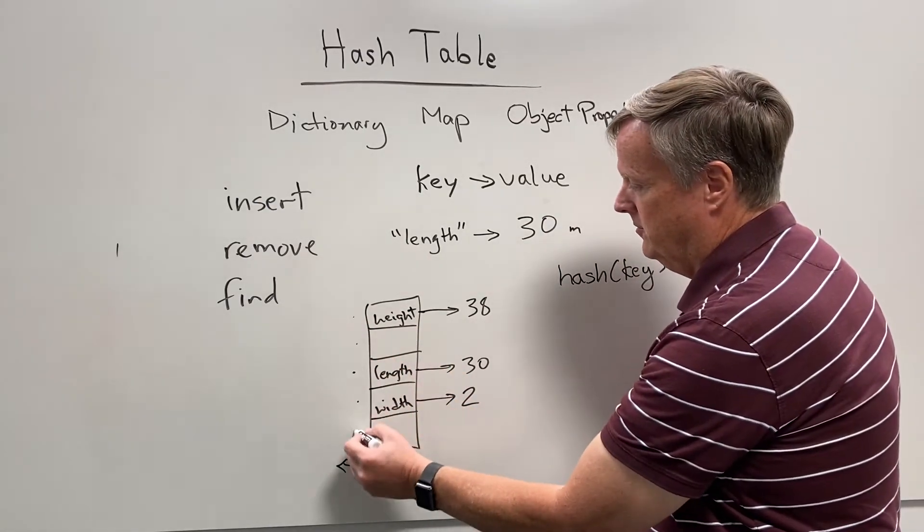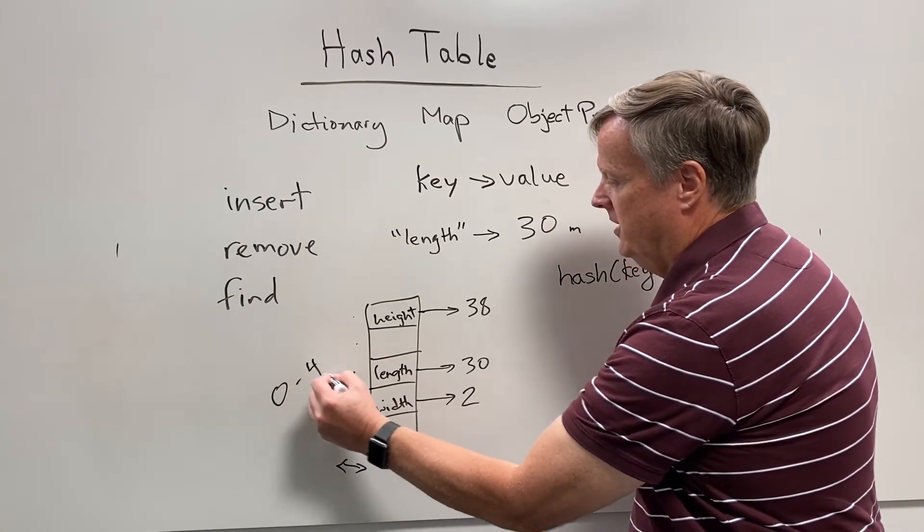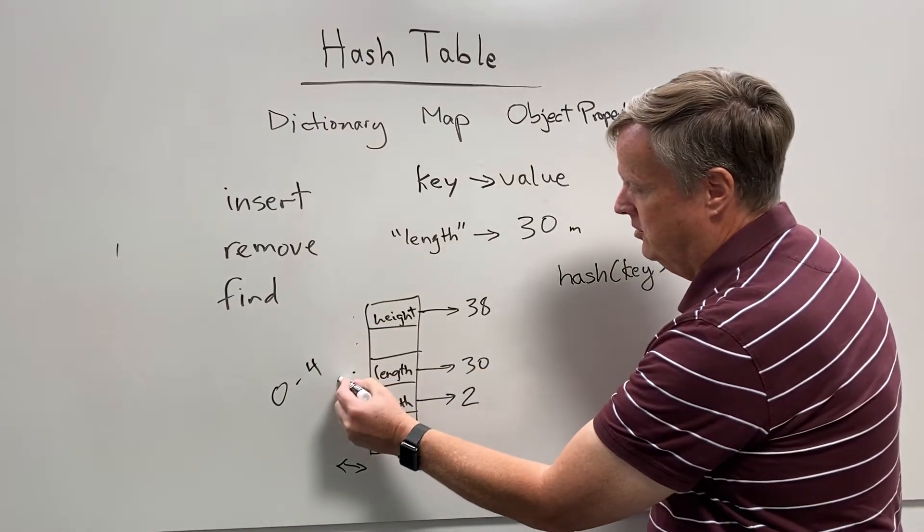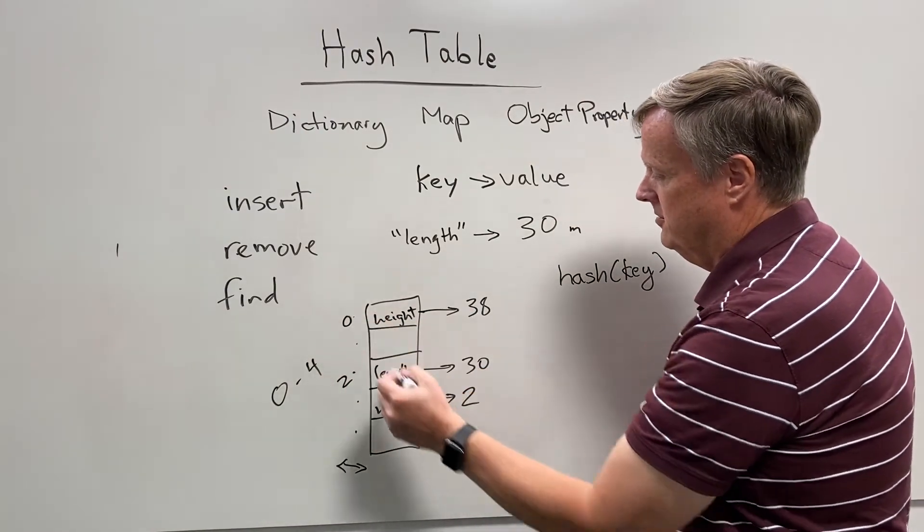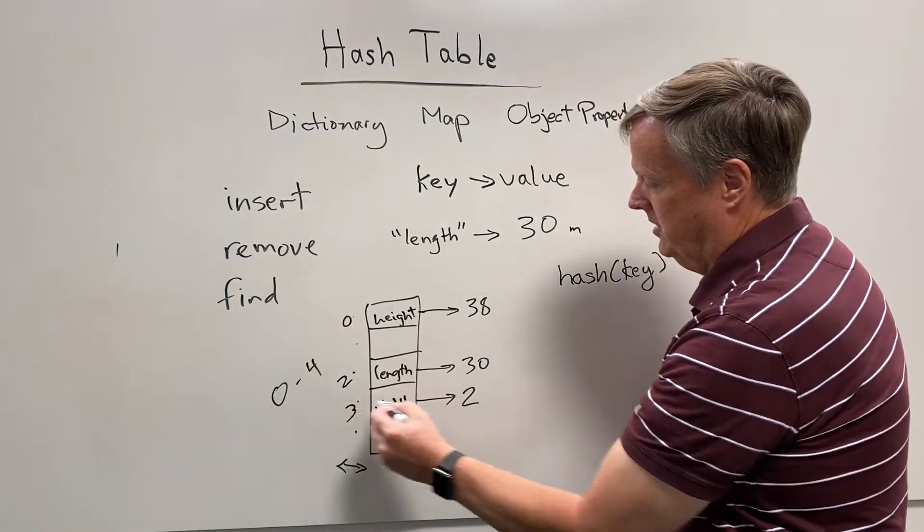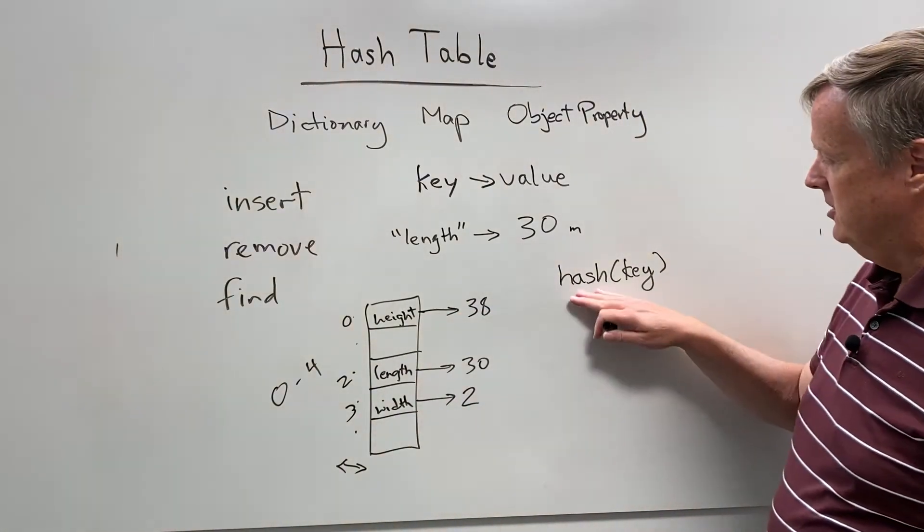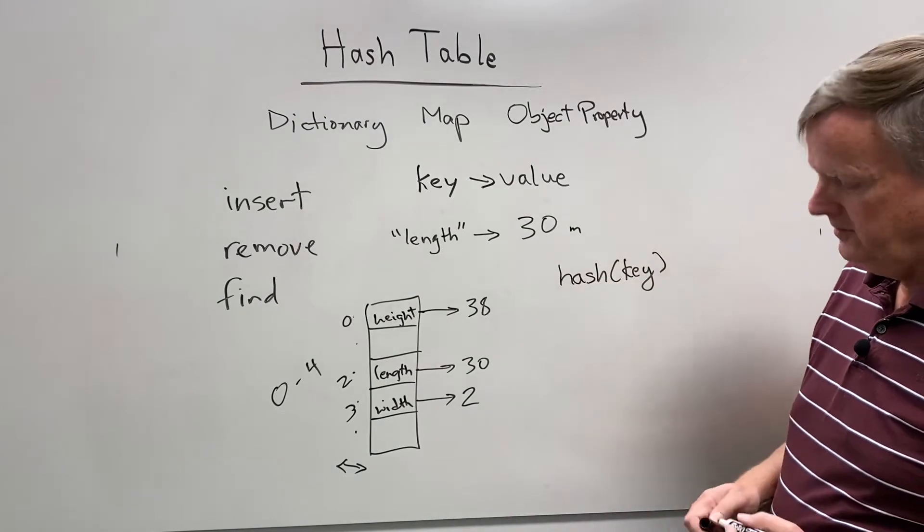Zero, one, two, three, four, something between zero and four. So in this case, I've assumed that length hashes to the value two, height hashes to zero, and width hashes to three. And that's where I then put these keys as I put them in that location. I use this hash on the key in order to figure out where they are.